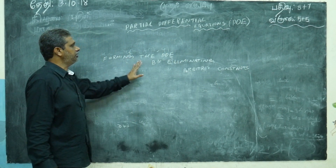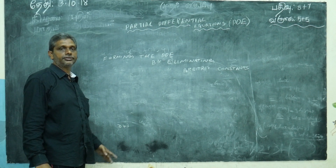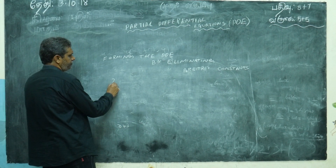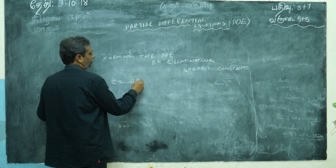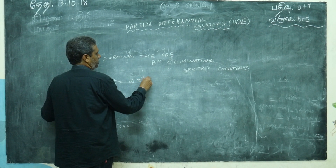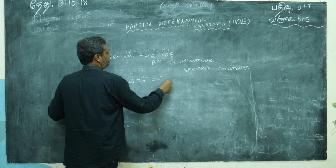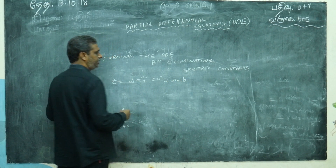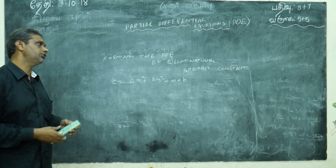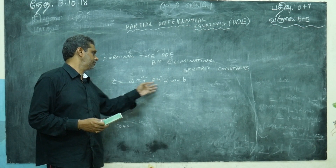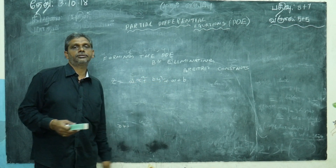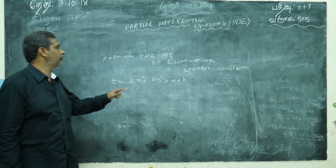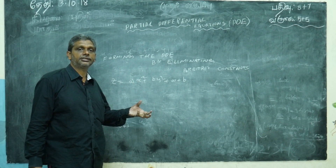Forming the PDE by eliminating arbitrary constants. Sometimes they will give z = ax²y² + a + b, and ask you to form the PDE by eliminating the constants a and b. We know x and y are the variables, and a and b are the constants. I want to remove a and b to get the partial differential equation.